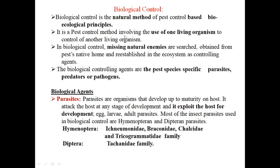Biological control is a pest control method involving the use of one living organism to control another living organism. In biological control, missing natural enemies are searched, obtained from the pest's native home, and re-established in the ecosystem as a controlling agent. First we search the natural enemy, bring it to the laboratory, rear it, and when we have reared it in large numbers, we release it in the new ecosystem as a controlling agent.